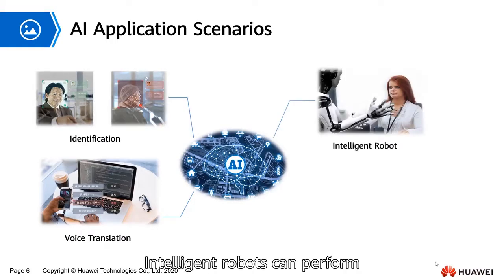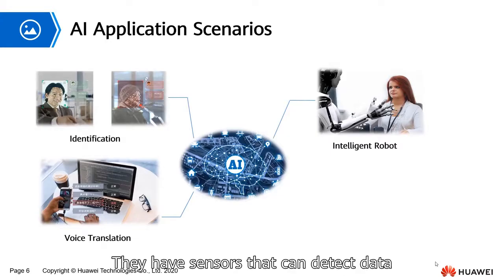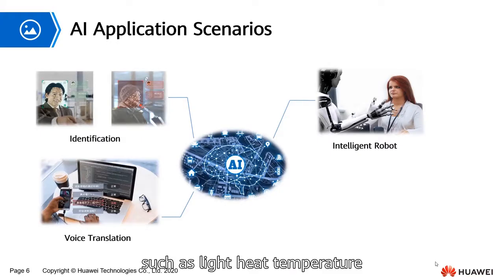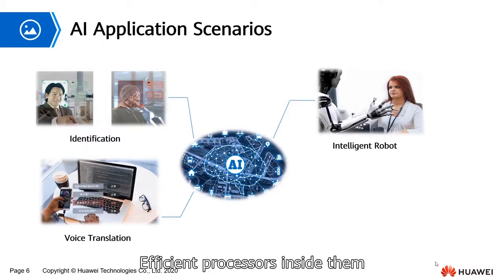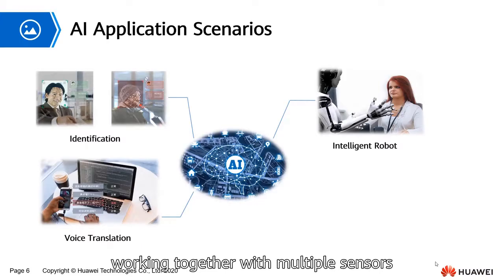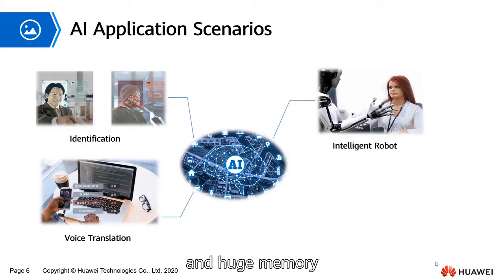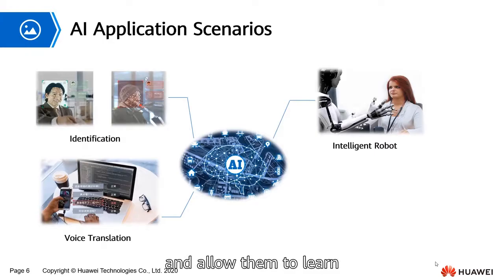Intelligent robots can perform tasks given by human beings. They have sensors that can detect data from the real world, such as light, heat, temperature, motion, sound, collision, and pressure, with efficient processors inside them, working together with multiple sensors and huge memory. This demonstrates their intelligence and allows them to learn from mistakes to adapt to new environments.